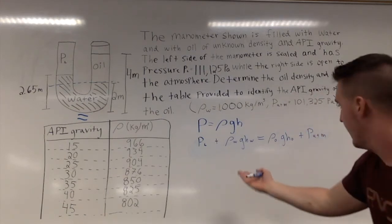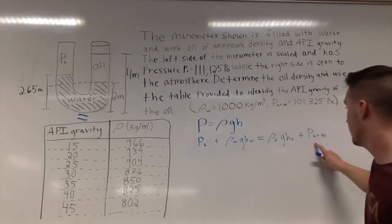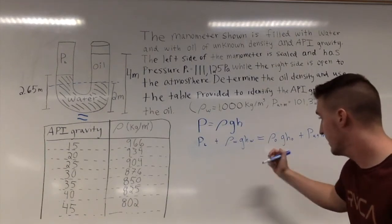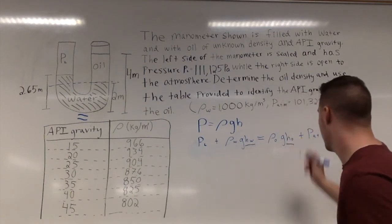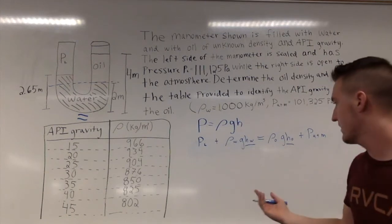We have most of these terms already. We're given P_left, we know P_atm, g is just a constant. The thing we don't have yet is the height of the water and the height of the oil. You have to be careful with these terms - which exact height are we talking about?